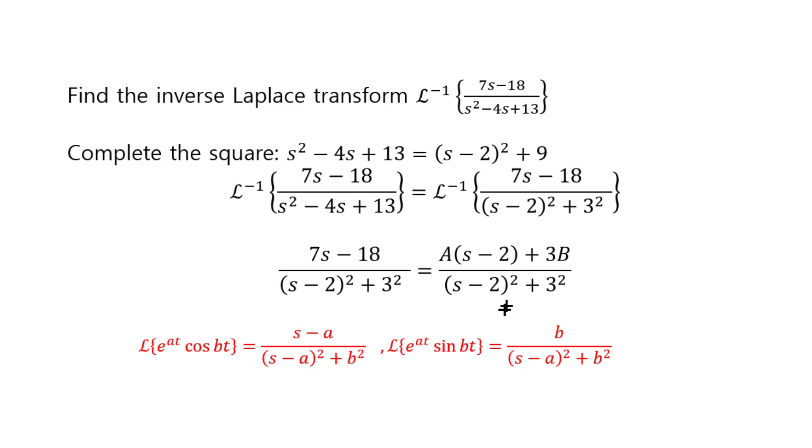And the reason we want to do it that way is because if you look at the table of Laplace transforms, you have exactly these two formats, right? We know that this should be the e to the at cosine bt, and this should be e to the at sine bt. So because we want to invert using these two facts, we want to write it in this form.